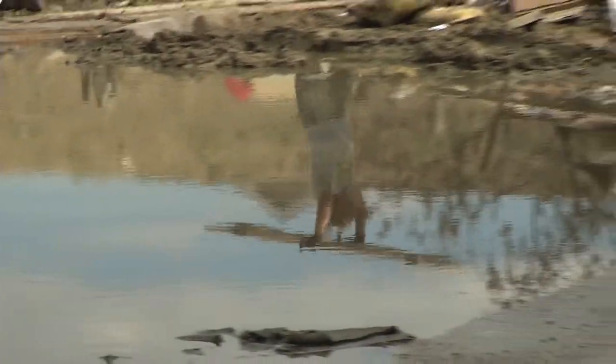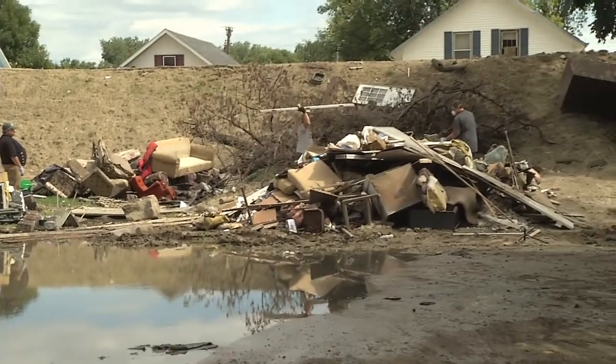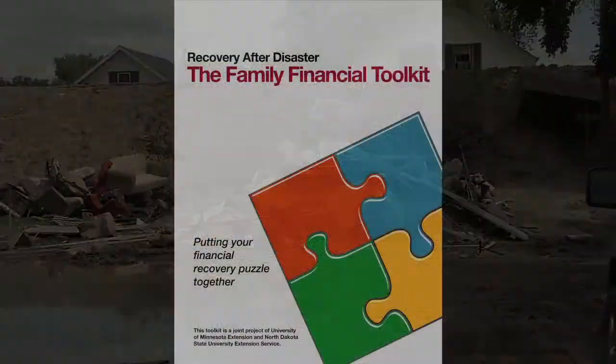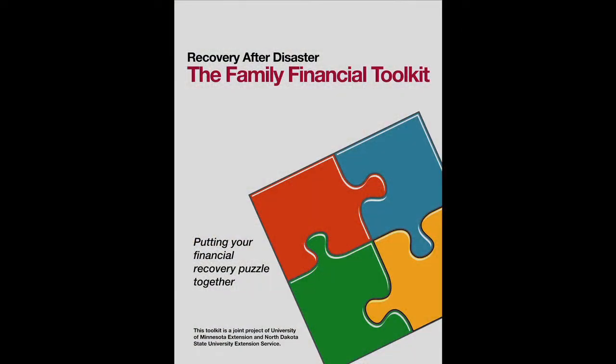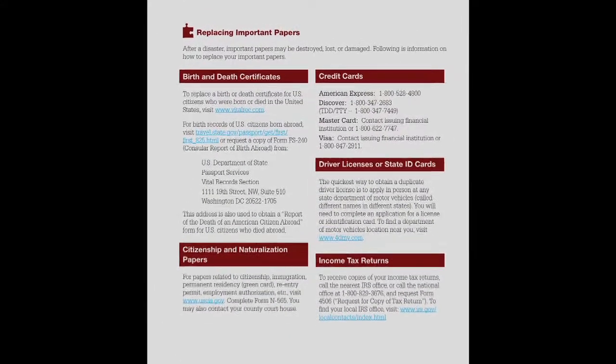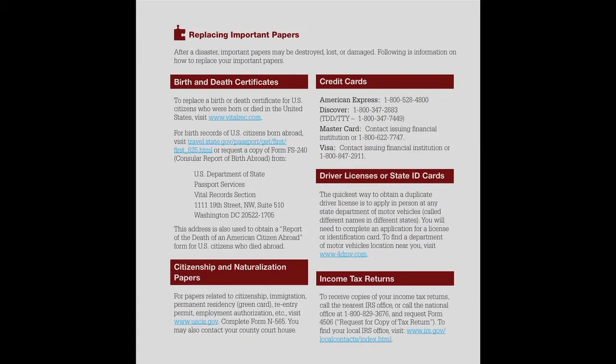Oftentimes, materials needed to make these decisions have been lost in the disaster. Information to recover these documents is available in the Family Financial Toolkit, because you will be needing those documents as you apply for recovery assistance and down the road. Make a list of what types of documents you have lost through the disaster and take the steps necessary to replace those.